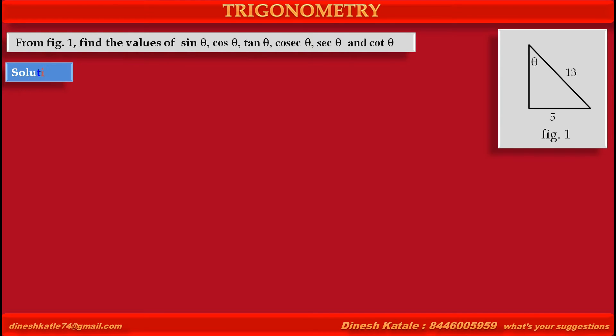Solution. Consider a given right-angled triangle with vertices, suppose ABC, right angle at B. Angle A is given theta. Length of BC is given 5. AC is given 13.